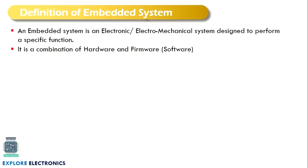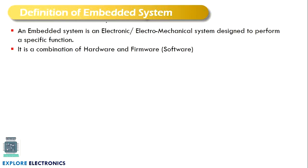Let us start with the definition. How to define an embedded system? What is an embedded system? An embedded system is an electronic system, or we say electro-mechanical system, because an embedded system will consist of some mechanical components as well, or the device will be manufactured using a mechanical system where electronics are going to be embedded with that. That is why the name is embedded system, and it is designed to perform a specific function.